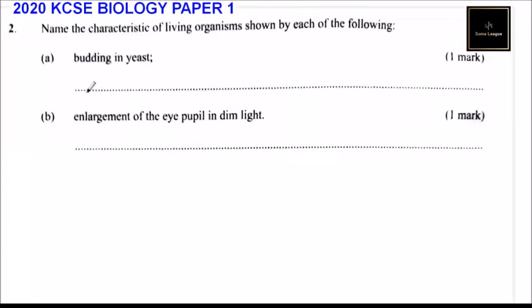Question number two, 2020 KCSE Biology Paper One. We are to name the characteristics of living organisms shown by each of the following: budding in yeast.